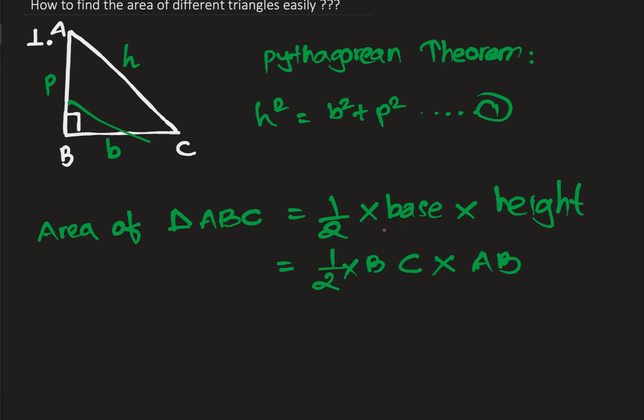Also, we can replace BC by B, which is also the base of the given right-angled triangle, and AB is P. In this way, we can easily find the area of the triangle.